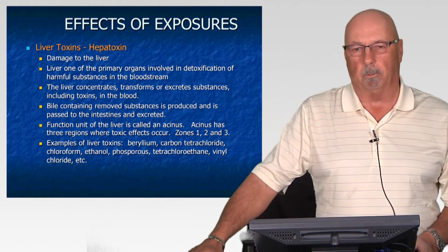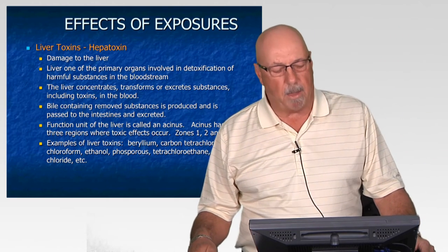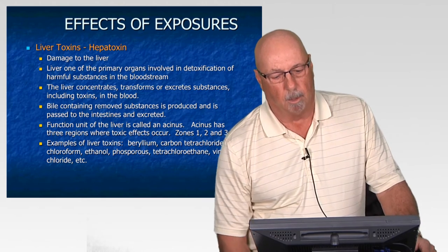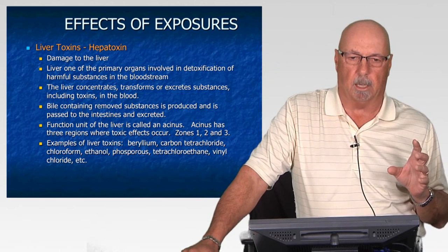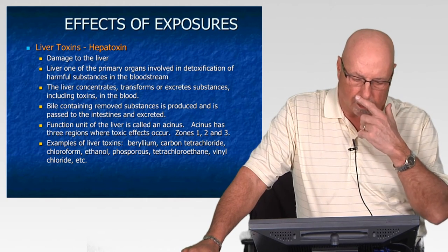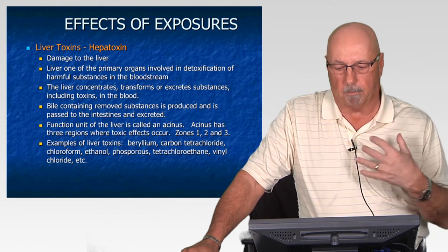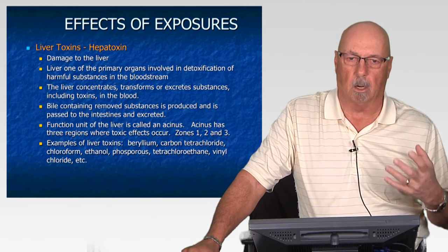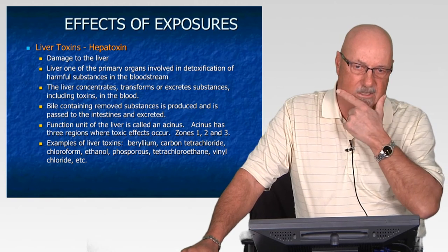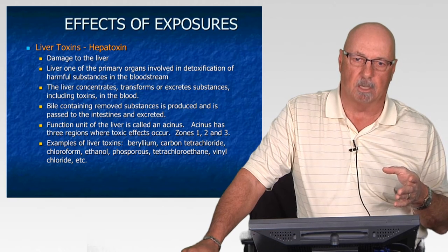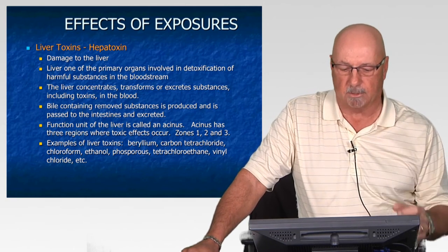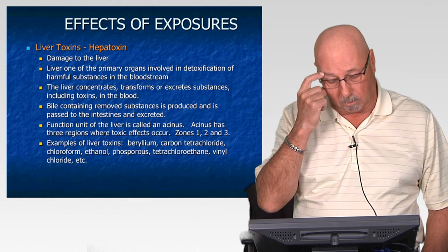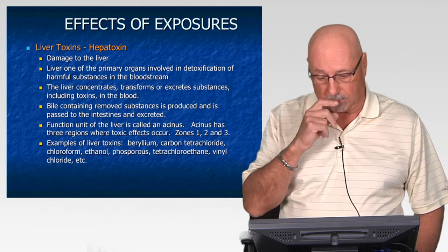Hepatotoxins are chemical substances capable of causing damage to the liver. The liver is a major processing plant — blood passes through and the liver tries to detoxify the blood system from harmful substances. That detoxification can either change or metabolize the substance into something non-toxic that passes out of the body, or in some cases it can change the compound into something more toxic to the human system, ultimately causing damage.